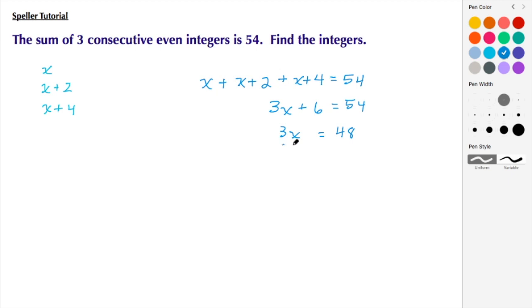Now we need to isolate this X by itself, so I end up dividing both sides by 3. 3 divided by 3 gives me 1, leaving this here with just X, and then we have 48 divided by 3, which gives me 16. So here we see that this first integer is going to be 16.